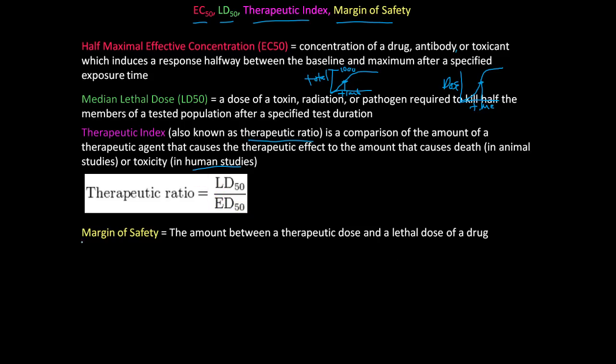And then margin of safety is kind of a big one. It's the amount between a therapeutic dose and a lethal dose of a drug. So if the margin of safety is low, then you have to monitor the drug's level inside the patient very closely. But if you have a margin of safety that is very high, you can be a little bit less specific about the dosage that is required to produce the therapeutic range. So margin of safety is kind of a big deal.